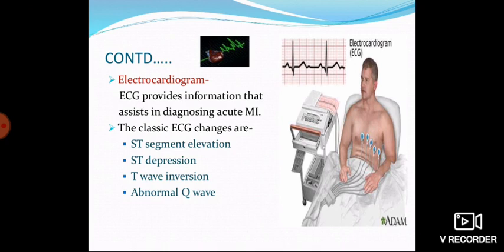The next diagnostic tool is the ECG — electrocardiogram. An electrocardiogram is a graphical recording of the electrical activities of the heart on graph paper; the machine and procedure are called electrocardiography. ECG provides information that assists in diagnosing acute myocardial infarction. The classic ECG changes are: ST segment elevation, ST segment depression, T wave inversion, and abnormal Q wave.